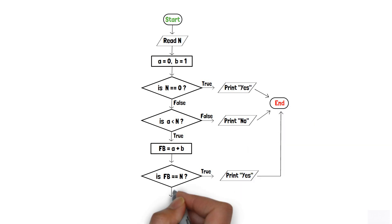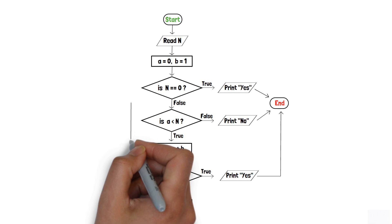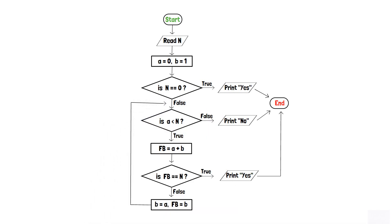But if fb is not equal to n, we add a process box and assign the value of b to a and the value of fb to b. Finally, a loop is added back to the second decision box so that it will verify whether a is less than n for each iteration. As soon as the value of a becomes equal to or greater than n, our program will print no and terminate.